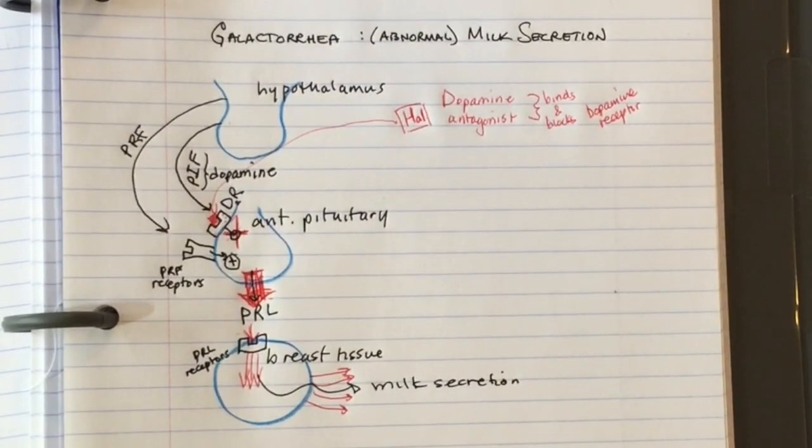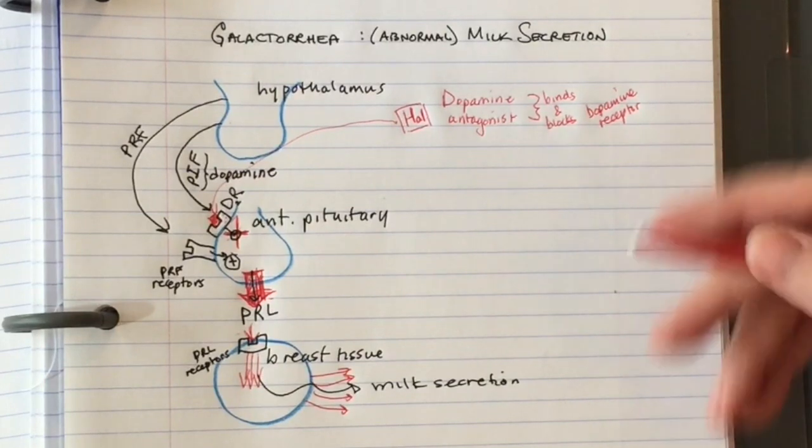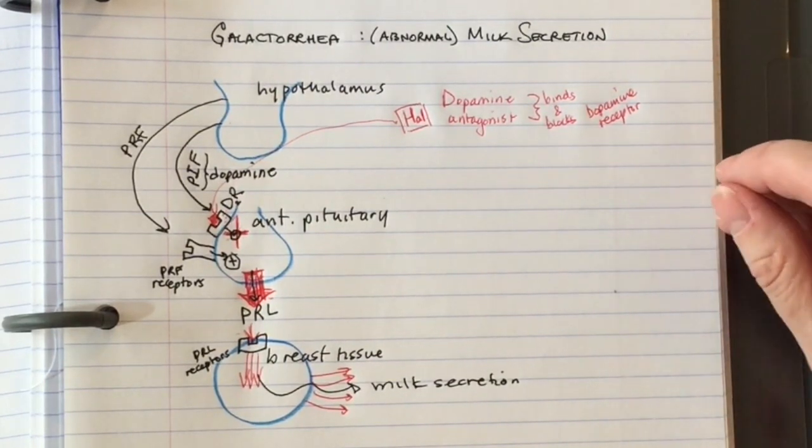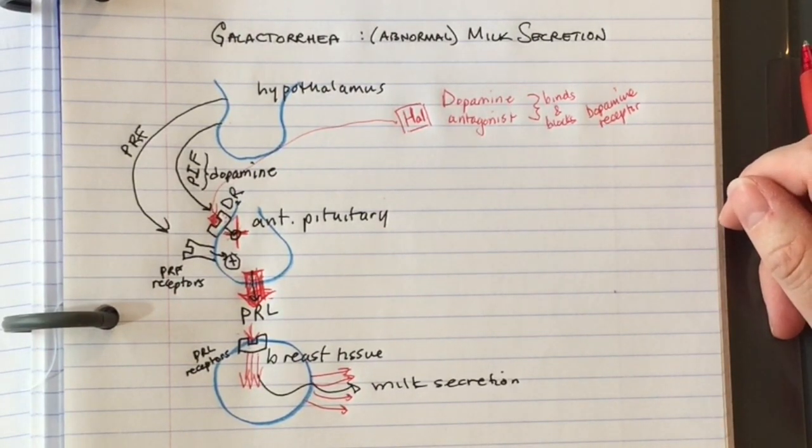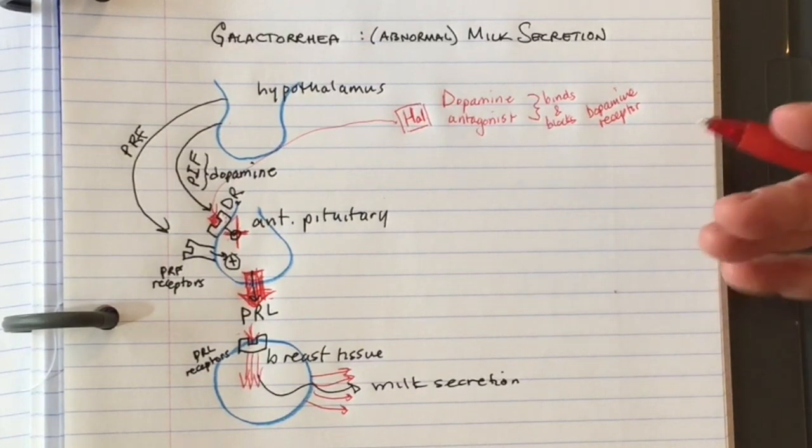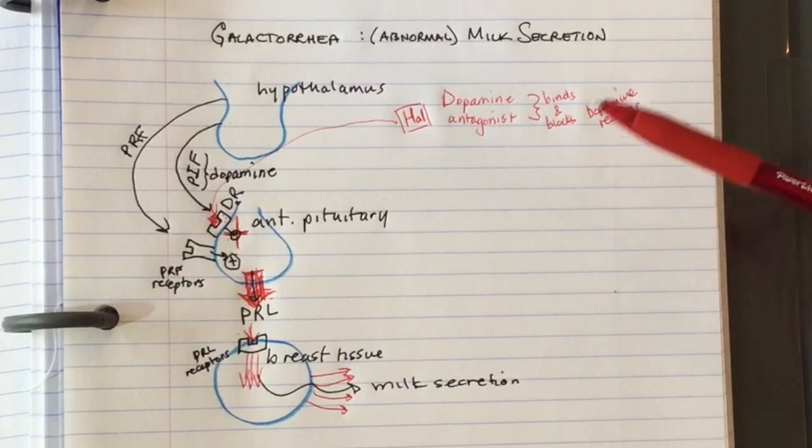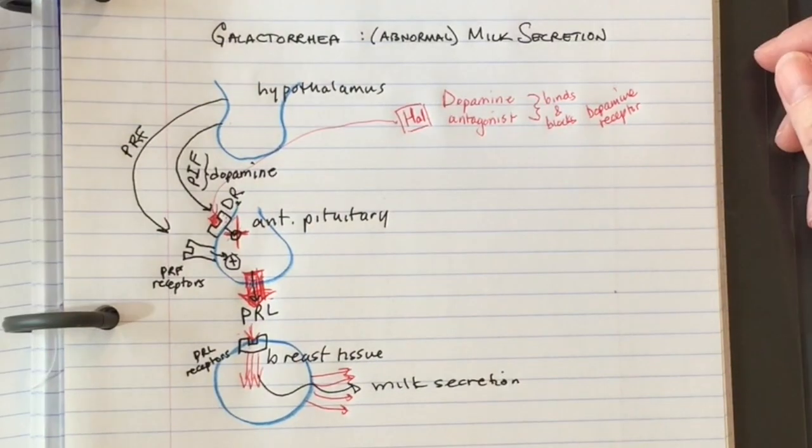Not all patients will get galactorrhea with dopamine antagonists, but it's a possibility. Some drugs are used because they cause galactorrhea. For instance, Reglan or metoclopramide helps reduce nausea but also helps cause milk secretion. It is an anti-dopamine drug, so in rare cases it can cause EPS.